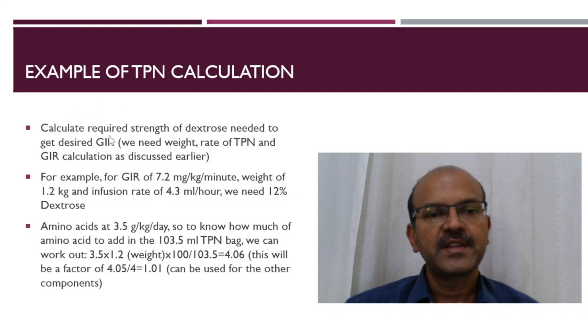We calculate the required strength of dextrose needed to get the desired GIR. For example, a GIR of 7.2 mg per kg per minute. We need 12% dextrose, which will be the strength of dextrose in the TPN solution.